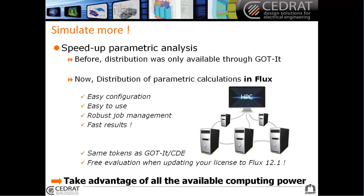I will show you how easy it is to configure and to use. We made a lot of work on making this job management more robust, so that there's no error inside the distribution of computation. And of course, you will benefit from fast results in every parametric project. What is important for you is that we use the same tokens as GOTIT CDE. So if you have already bought some tokens for GOTIT and CDE, these are the same tokens that can provide you some speedup for the parametric analysis.